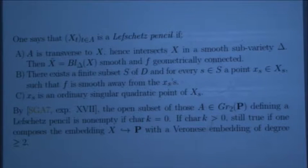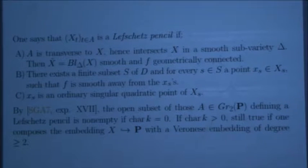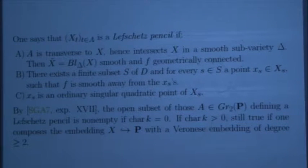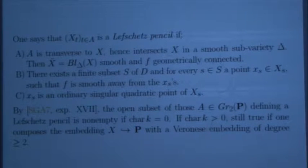The existence of a Lefschetz pencil is not completely trivial. In characteristic 0, there is always a Lefschetz pencil. In positive characteristic, it's almost true, but you might have to enlarge the projective embedding a little bit by taking, instead of hyperplane sections, hypersurface sections of degree at least 2. Then they exist.